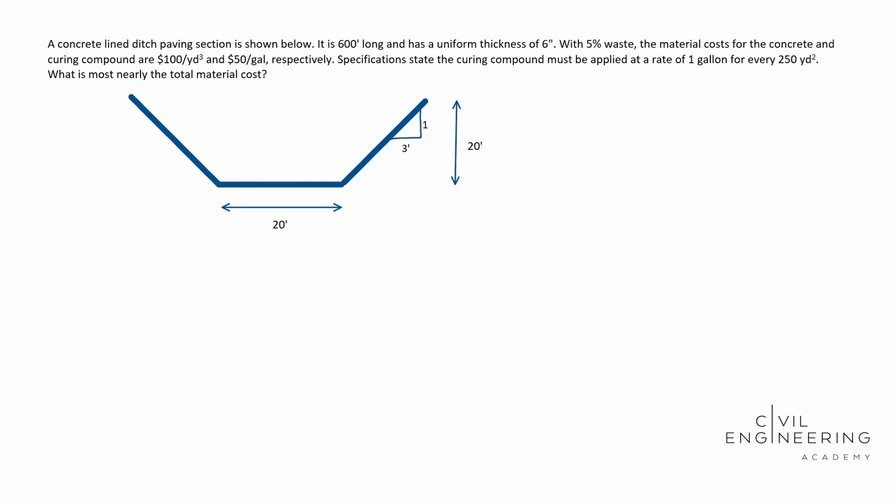Let's go ahead and read the problem. It says a concrete lined ditch paving section is shown below. It is 600 feet long, has a uniform thickness of six inches with a 5% waste. The material costs for the concrete and the curing compound are $100 per cubic yard and $50 per gallon respectively. Specifications state the curing compound must be applied at a rate of one gallon for every 250 square yards. What is most nearly the total material cost?